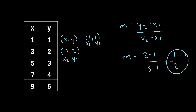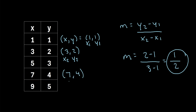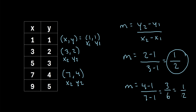It doesn't actually matter which coordinate pairs you choose — the slope will always be the same. To prove that, let's say we use the point 7,4 as our x2 and y2, still using 1,1 as x1 and y1. We get y2 minus y1, so 4 minus 1, divided by x2 minus x1, so 7 minus 1. That gives us 3 over 6, which reduces to 1/2. So it doesn't matter which coordinates you choose — just pick any two rows and plug them into the slope formula.